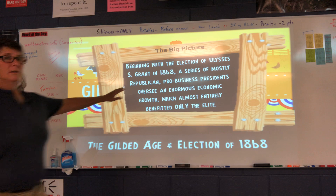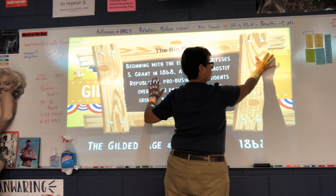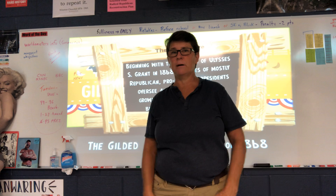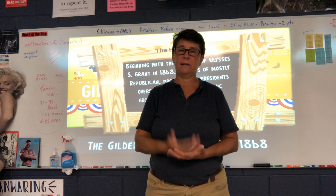Starting with Ulysses S. Grant, there was a series of mostly Republican, pro-business presidents from 1865 to 1900. Republican is to the right, so it's pro-business — but over on the left are the laborers, and they didn't care about laborers. Like, you could have your arm cut off in an industrial accident, and the company would just say 'sorry about your arm, good luck, next.' As a result, there were going to be lots of labor protests and labor strikes.